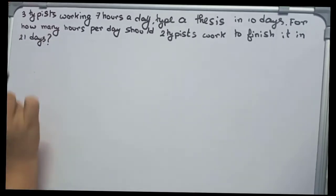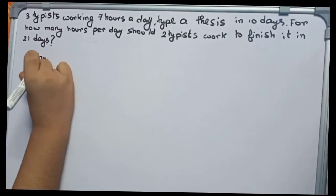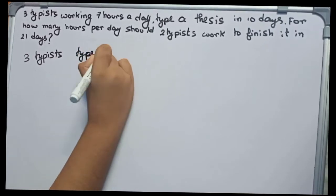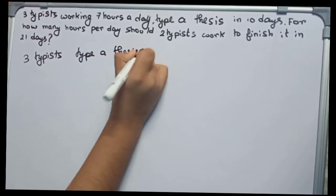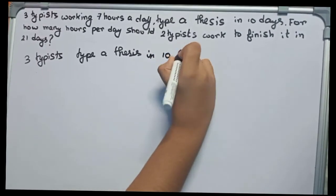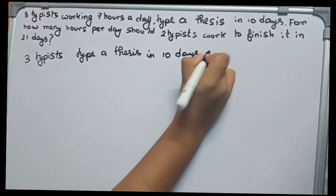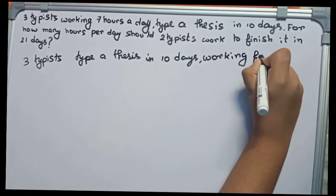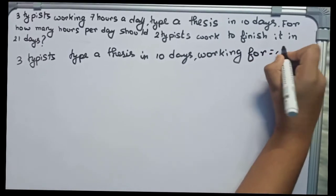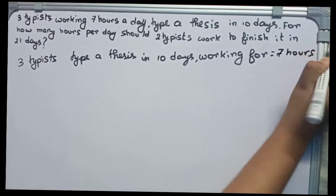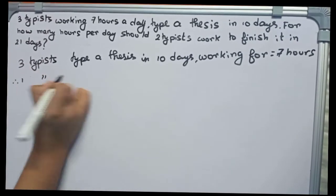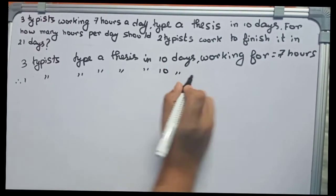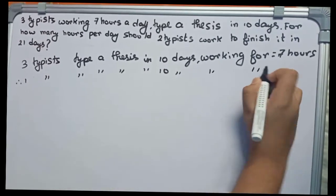So let's start. First we write: three typists type a thesis in 10 days working for equals to seven hours. Therefore, we write: one typist types a thesis in 10 days working for—it will definitely take more time—so it will become seven into three hours.